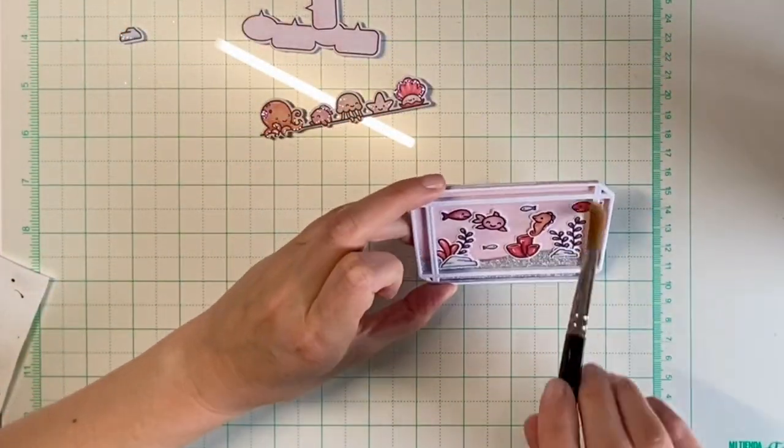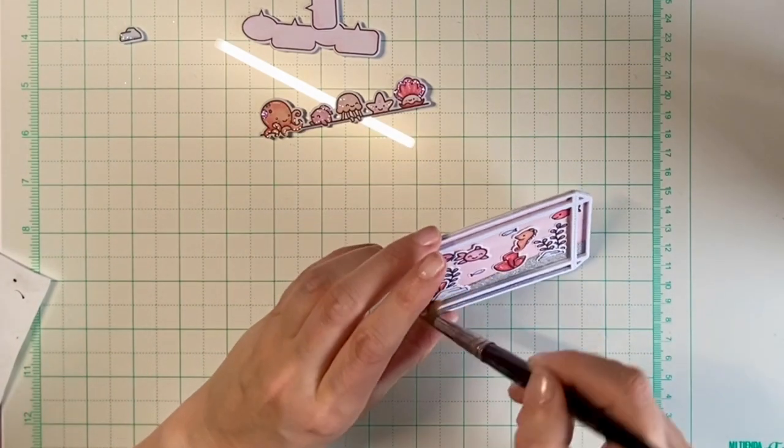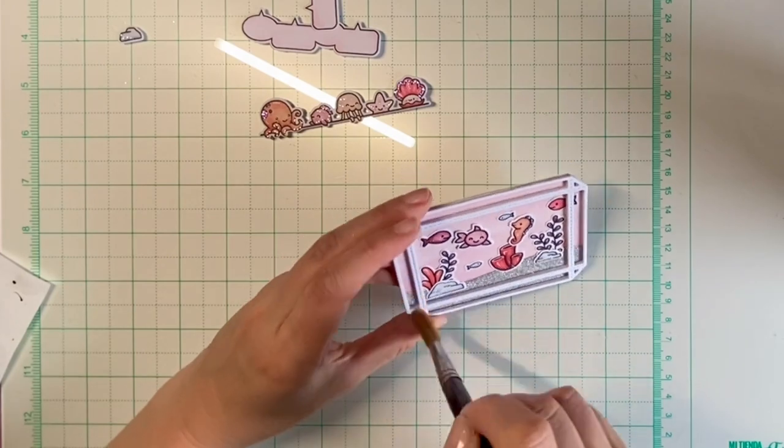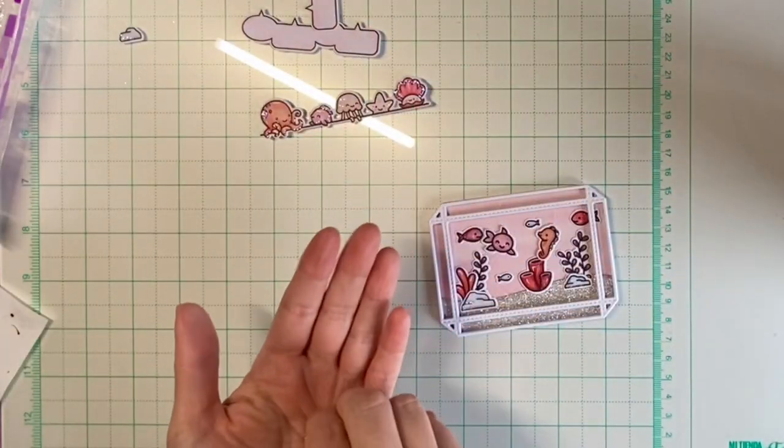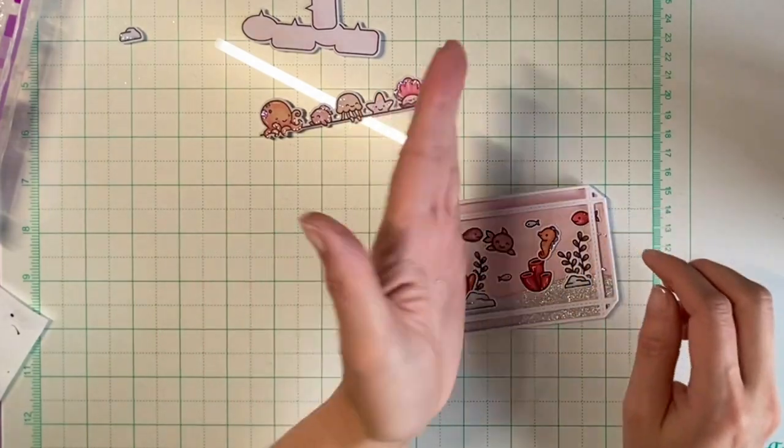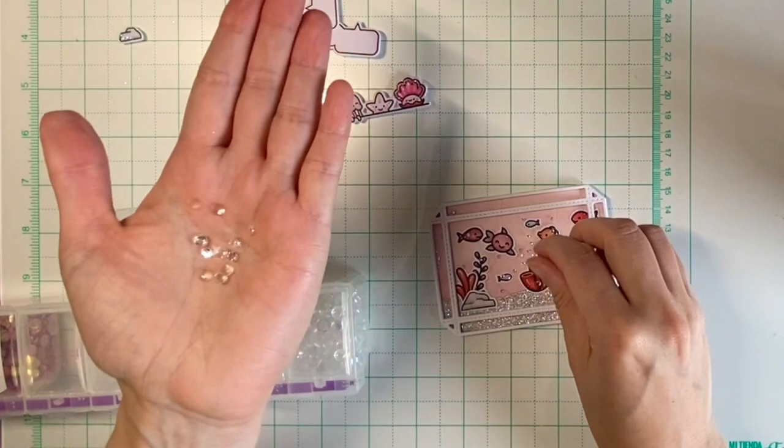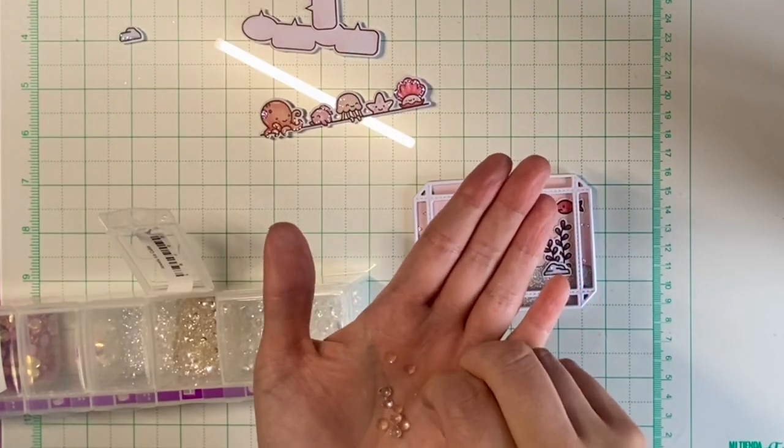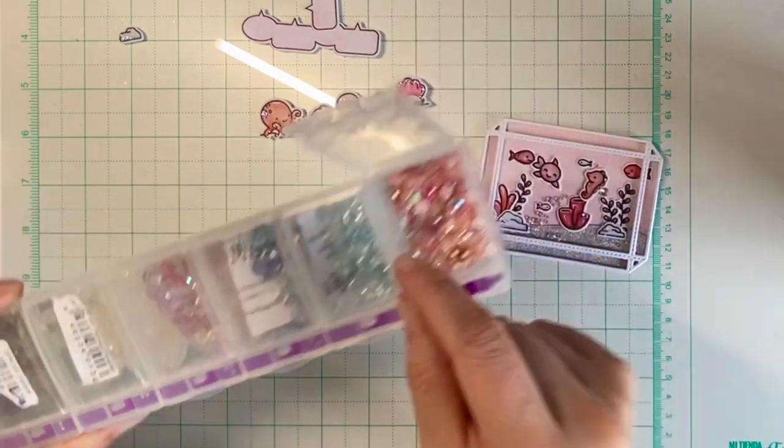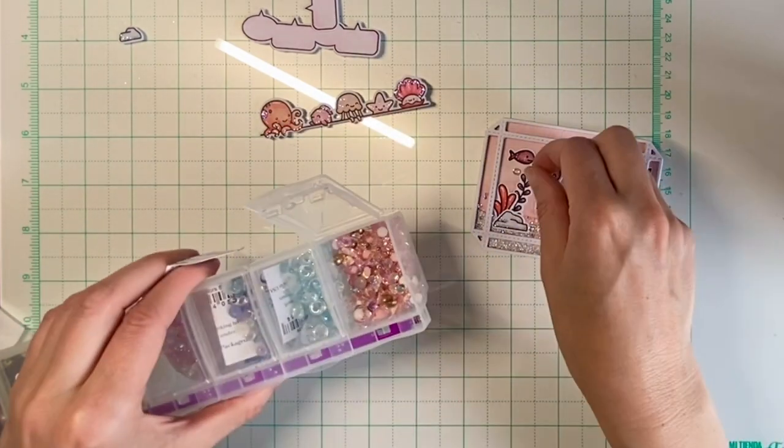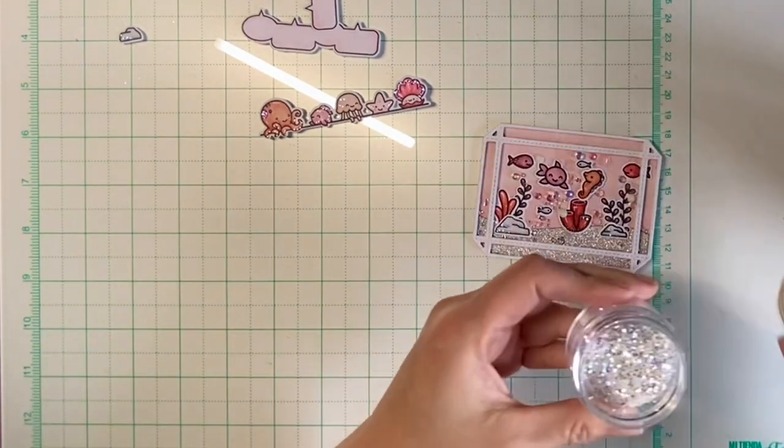Before adding my shaker bits, I used some anti-static powder with a paintbrush. Now I'm starting to fill my shaker using these tiny jewels, some larger jewels, and this pink shaker mix by Buttons Galore, and finally a bit of Lawn Fawn's Chunky Glitter.